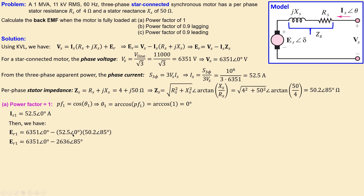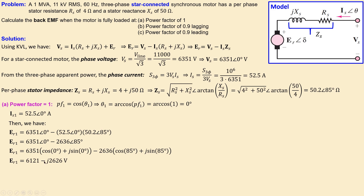Multiplying the magnitudes and adding the phases, then converting to rectangular form using cosine and sine components, and combining real and imaginary parts gives us the rectangular representation for the back EMF. Converting to polar representation, we have 6661 volts with a phase orientation of 23.2 degrees.